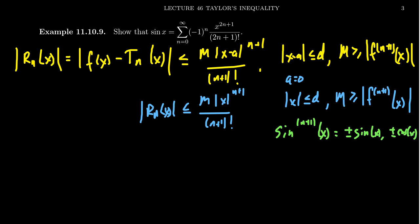Because the derivative of sine is cosine, its derivative is negative sine, its derivative is negative cosine, its derivative is positive sine. And so the derivatives of sine are always plus or minus sine or plus or minus cosine.